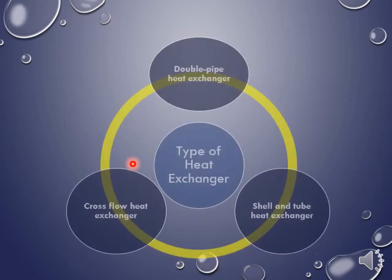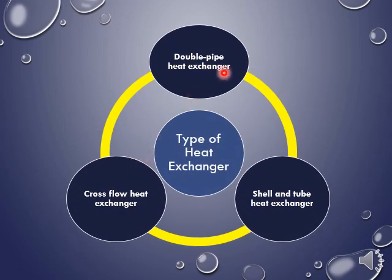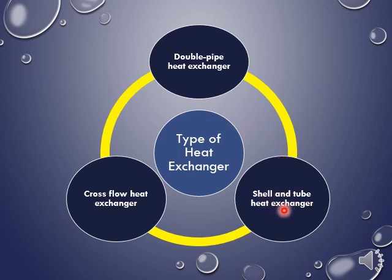Basically there are three main types of heat exchanger. The first one is the double pipe heat exchanger, which is not commonly used in industry because not much heat is generated through it. The second one is the shell and tube heat exchanger, which is widely used in industry because it is very efficient. The last one is the cross flow heat exchanger. I will explain later how each category of heat exchanger functions.